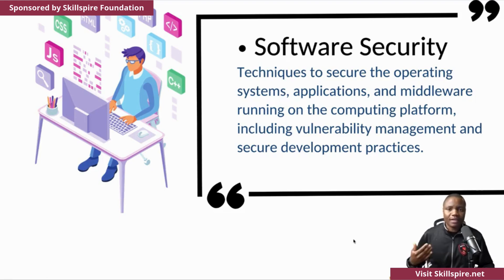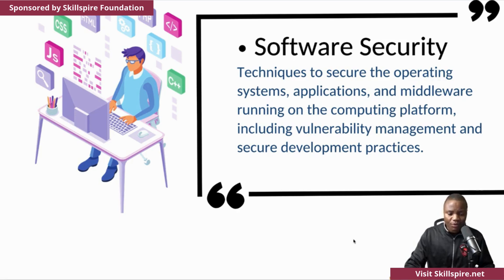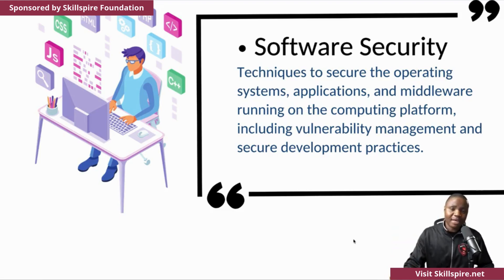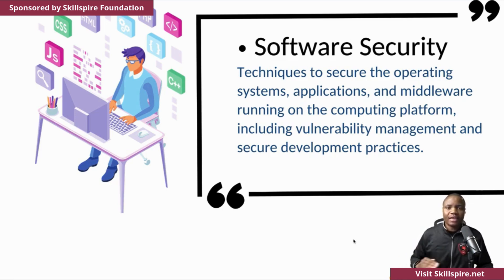We need to make sure that we have a good understanding of our software footprint — what we have in terms of software — and then we can protect it. That might include operating systems, any applications we have, middleware running on computing platforms like hypervisors, and we can also include vulnerability management and make sure that we have training for our users so they can follow best practices as they deploy these solutions. With software, we're making sure that anything that is not hardware — that is installed or managed — is actually secure.